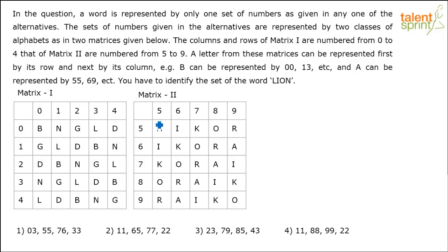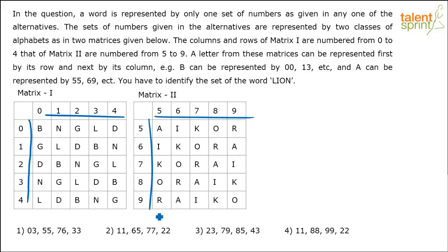So you can see there are two matrices. In matrix 1, we have both columns and rows numbered as 0 to 4, and matrix 2 has rows and columns numbered 5 to 9.